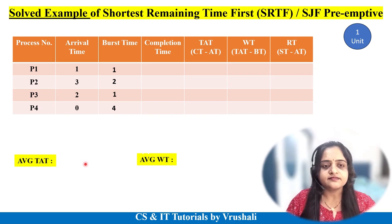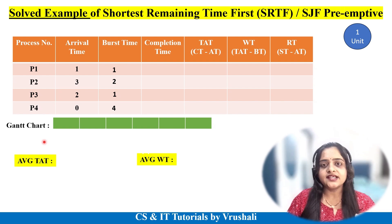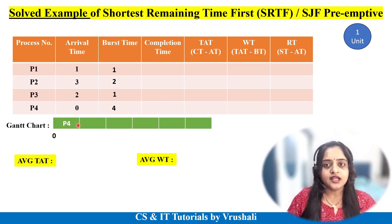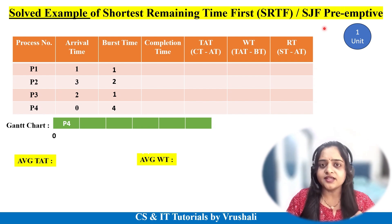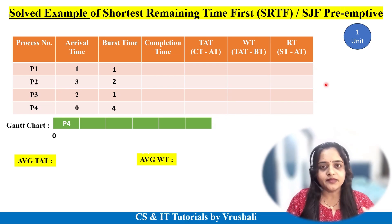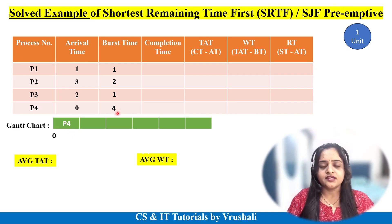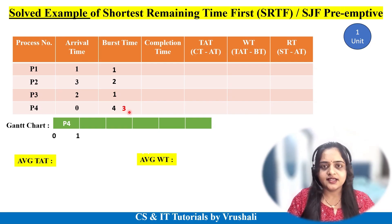The first step is to draw the Gantt chart, which is basically a visualization chart of your processes. It always starts with 0. Check which process has come at 0 units of time — that is P4. So the CPU executes P4 first. Now remember: in SRTF or SJF preemptive scheduling, the CPU executes each and every process only one unit of time at a time. At time 0, P4 has come with a burst time of 4 units, but the CPU executes only 1 unit of time. So 3 units of time remain for P4.